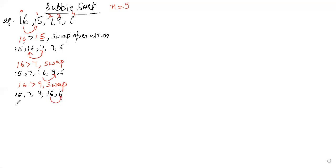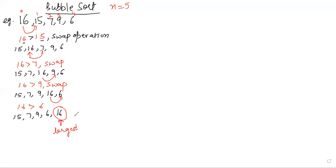Again, I compare 16 with 6, and 16 is greater than 6. So the array now becomes 15, 7, 9, 6, and 16. If we pay close attention to this result, 16 is the largest element in the array. The sorting is called bubble sort because it is based on the idea that bubbles pop out from water — the largest element has bubbled out and reached its required position. So 16 has bubbled to the end and will not be moving anywhere after this.